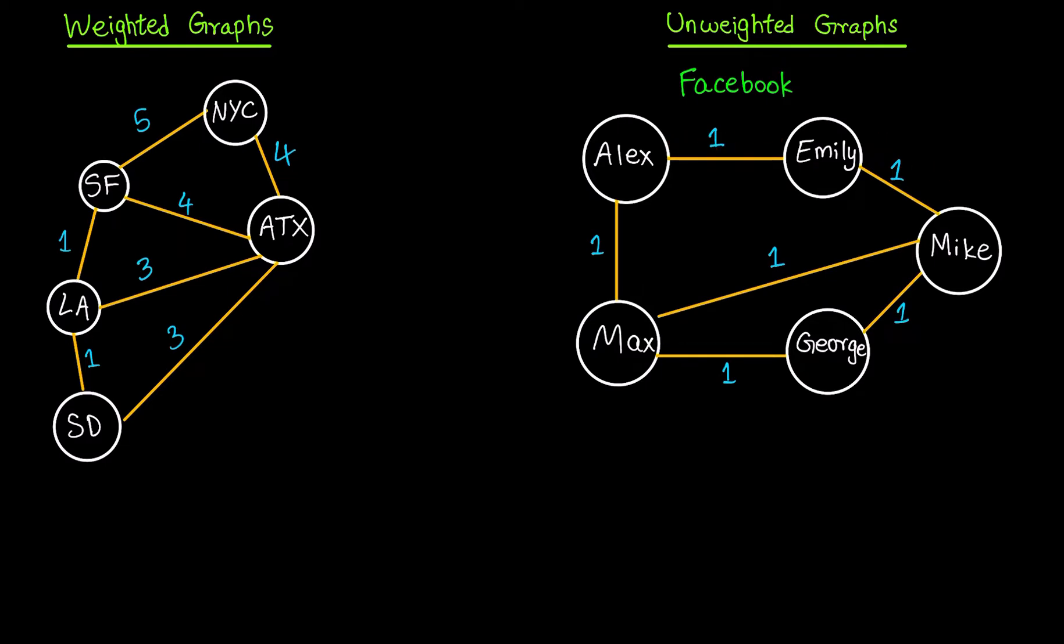The reason we have bi-directional edge is because Alex is friends with Emily, Emily is friends with Alex, Emily is friends with Mike, then Mike is also friends with Emily, and so on.